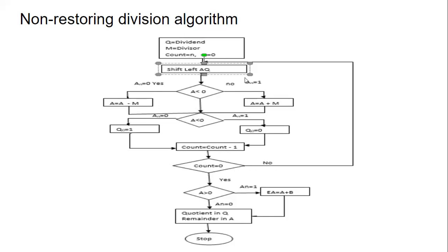If the most significant bit of A is 1, then we add the value of the divisor with the content of A, giving A plus M. Then after doing so, we again check the most significant bit of A. If it is equal to 0, then the LSB of Q (Q0) is set to 1. If the MSB of A is 1, then Q0 is set to 0.